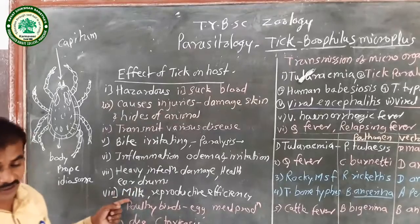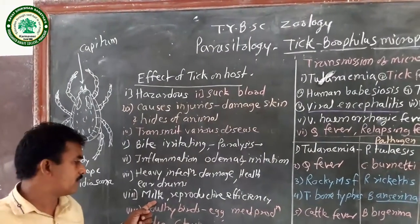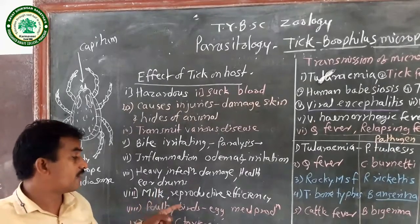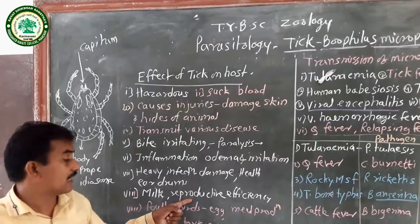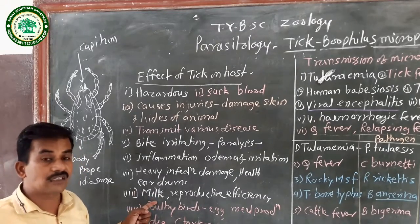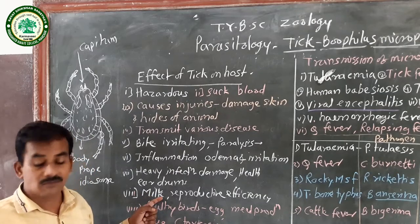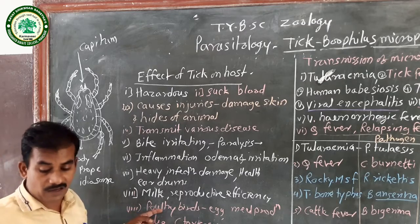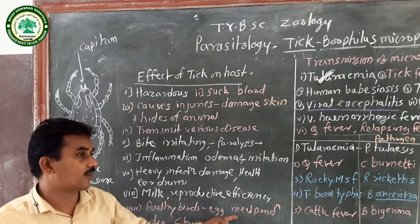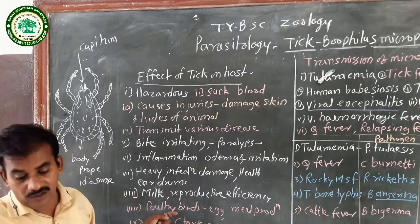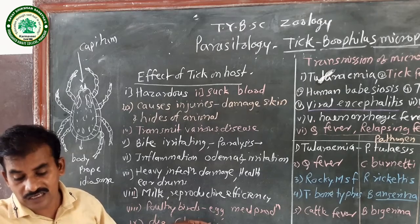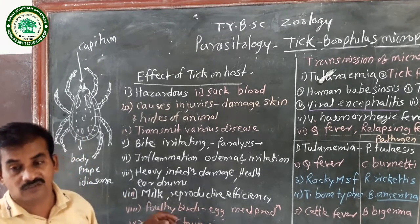Due to large-scale blood loss, particularly in cattle under heavy infection, the milk production capacity of the animal decreases. Due to heavy infection, cattle levels decline — this is very important because in India, cattle are domesticated for milk production. Regarding poultry birds reared for egg and meat production — due to heavy tick infection, poultry birds decline in egg-laying capacity, meat production, and weight loss occurs.